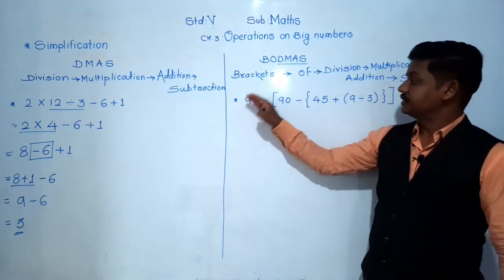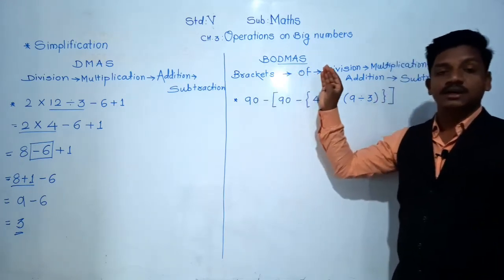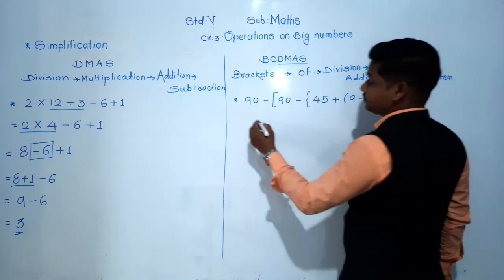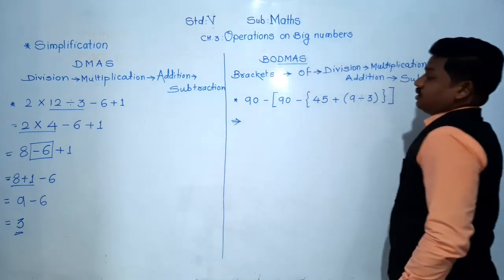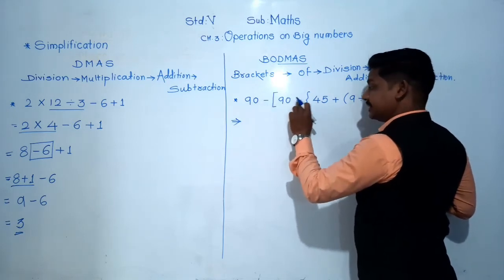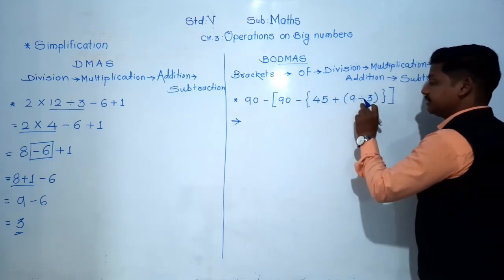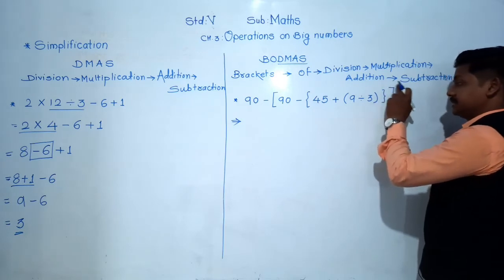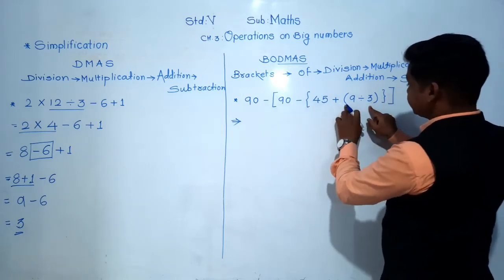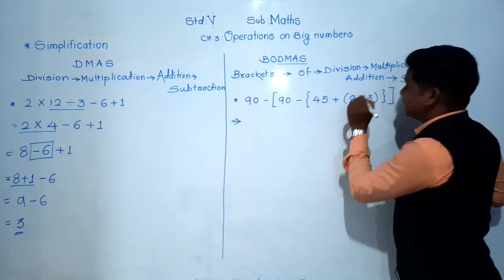Here is an example which includes brackets. Let us simplify: 90 − [90 − {45 + (9 ÷ 3)}]. In the square bracket there is a curly bracket, and in the curly bracket there is a simple bracket. So first we solve the operation in the simple bracket: 9 ÷ 3.